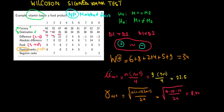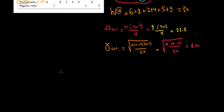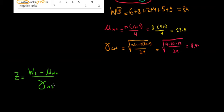Now we have our sample data and our expected population values. We test whether they're significantly different by looking at the standard normal distribution. We calculate the z-value: the difference between our sample data and the expected population value, divided by the standard error of the Wilcoxon sum of positive ranks. That's 34 minus 22.5 divided by 8.44, which equals 1.36.